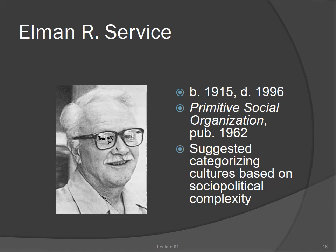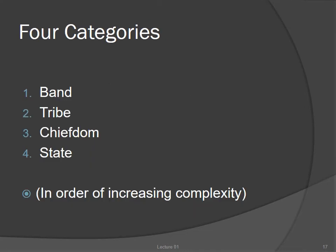In the American archaeology tradition, the classification system used by most scholars is the one first proposed by Elman Service about 50 years ago. Service's system was first published in 1962 in a book called Primitive Social Organization. Though it isn't used much anymore by cultural anthropologists, the four categories are especially useful for archaeologists because we study very great timespans, and over the lifespan of a single cultural tradition, societies may evolve from one form of organization to another. In Service's system, there are four categories based on socio-political complexity: band, tribe, chiefdom, and state.